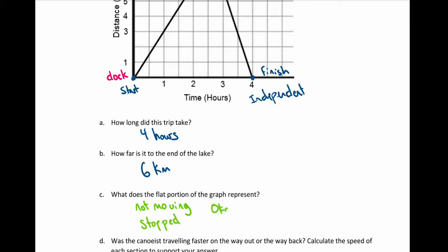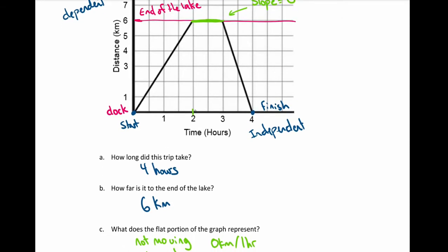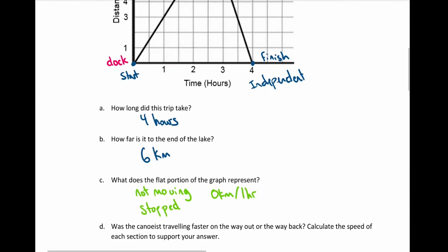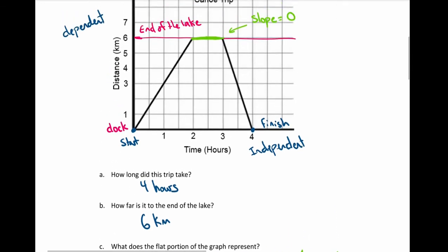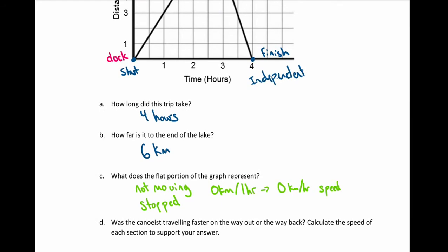We see zero kilometers per one hour — looking at the time, she goes from two to three hours. Zero kilometers per hour is her speed, so she's not moving. All of this goes back to: not moving, stopped, zero kilometers per hour — her speed is zero kilometers per hour.